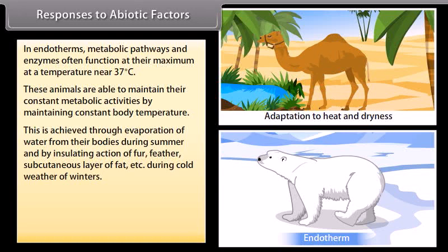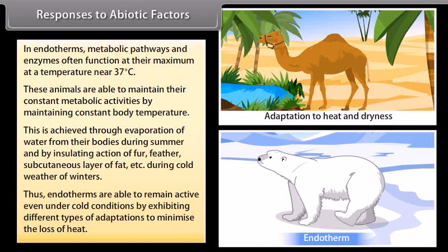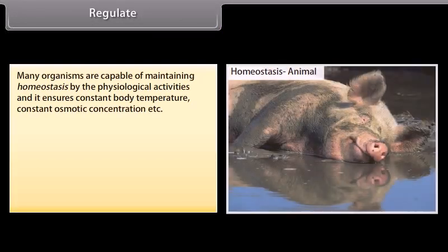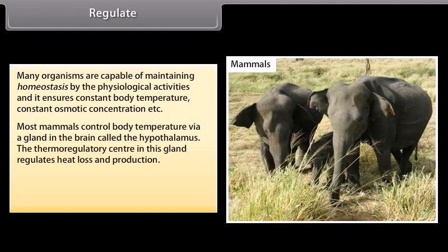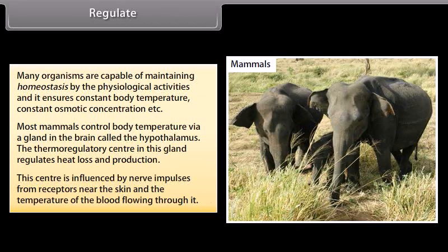During cold winters, endotherms remain active by exhibiting different types of adaptations to minimize heat loss. Many organisms are capable of maintaining homeostasis through physiological activities, ensuring constant body temperature and osmotic concentration. Most mammals control body temperature via a gland in the brain called the hypothalamus. The thermoregulatory center in this gland regulates heat loss and production, influenced by nerve impulses from receptors near the skin and the temperature of blood flowing through it.